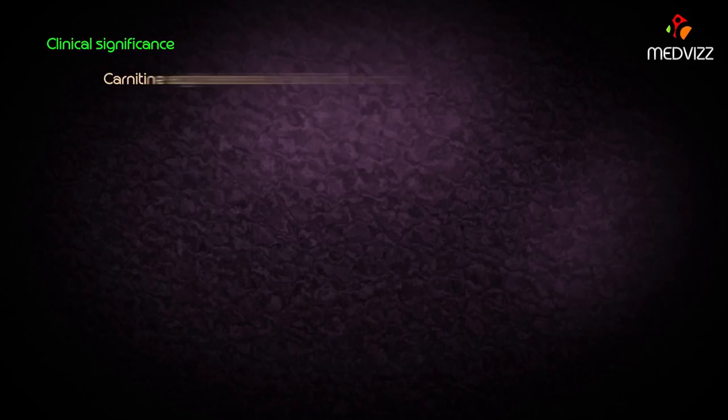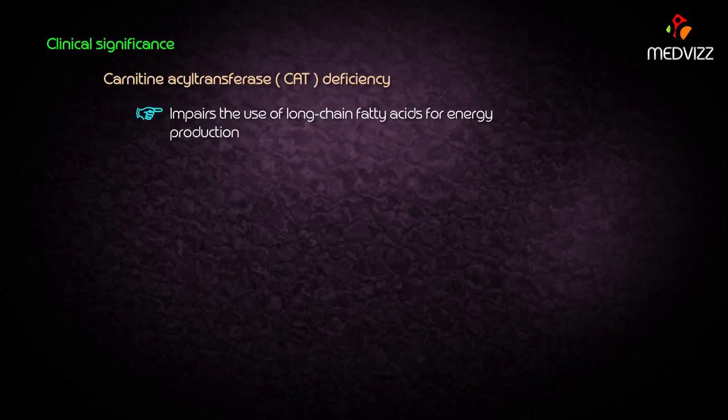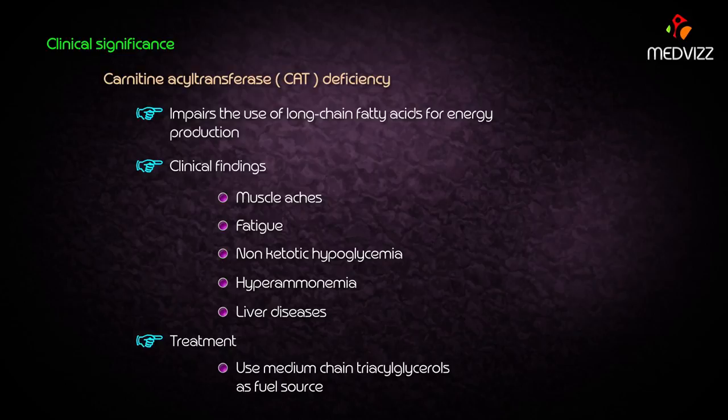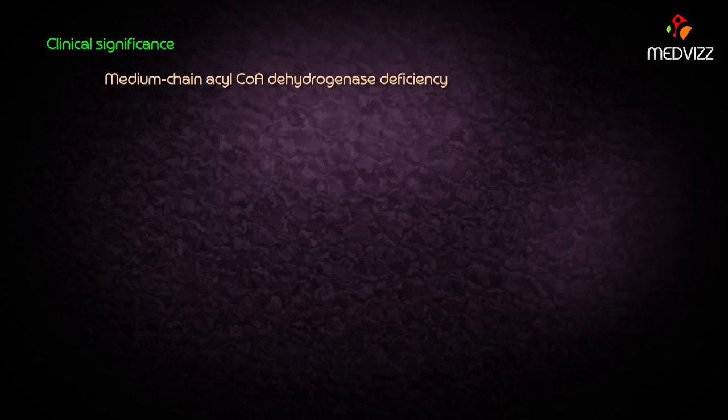Regarding clinical significance, the important deficiency is carnitine deficiency or carnitine acyl transferase deficiency. This impairs the use of long chain fatty acids for energy production, causing clinical findings such as muscle aches, fatigue, non-ketotic hypoglycemia, hyperammonemia, and liver diseases. Treatment includes using medium chain triacylglycerols as a fuel source.